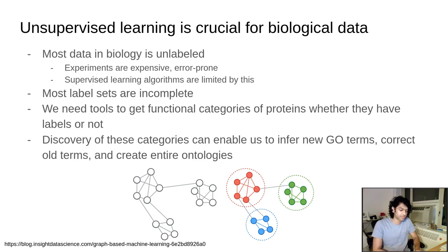We need tools to get these functional categories of proteins, whether they have labels or not. Most of the newly-sequenced organisms that are out there likely have some new functions. So we have to have a way of discovering these categories in order to infer new GO terms, to correct the old terms, or even create entirely new ontologies and really classify proteins without labels.